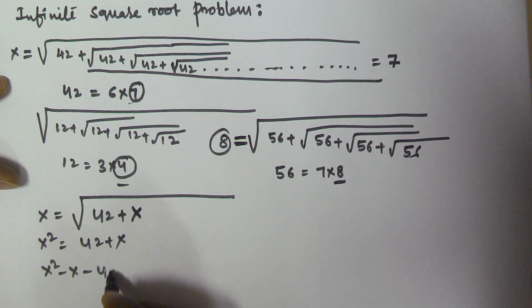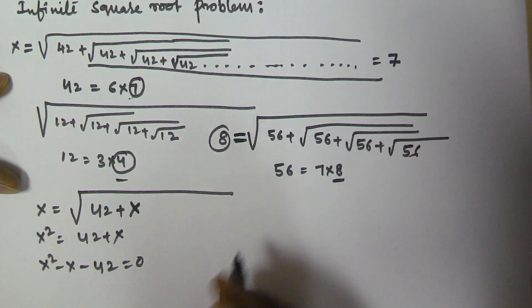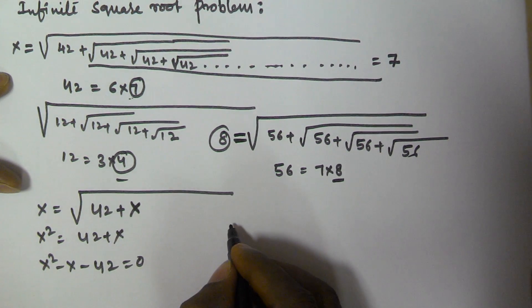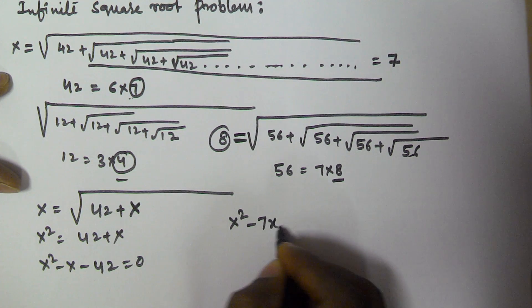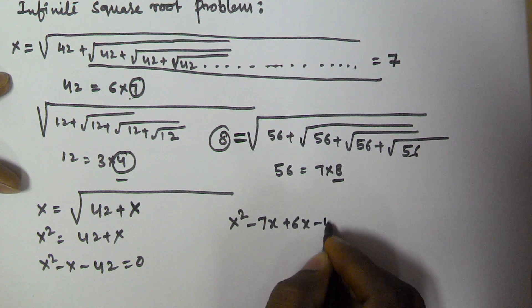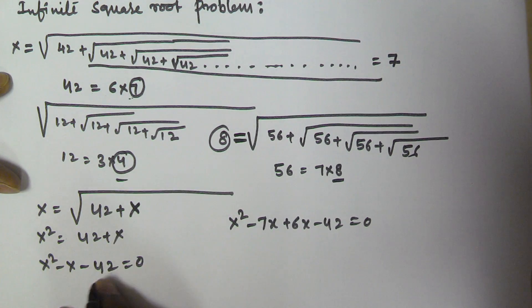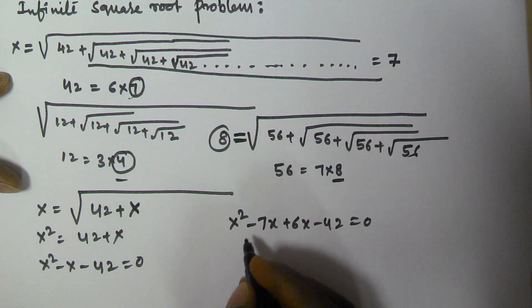So x squared minus x minus 42 equals 0. We can rewrite this as x squared minus 7x plus 6x minus 42 equals 0, and factor from there to solve for x.